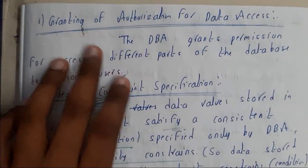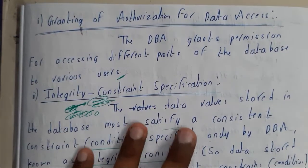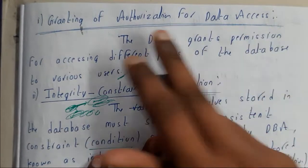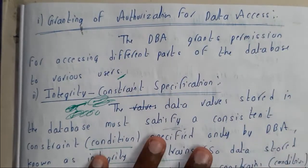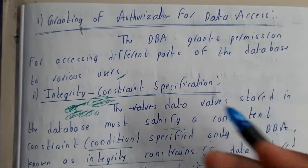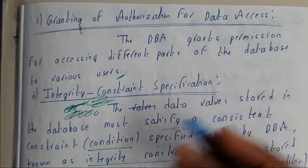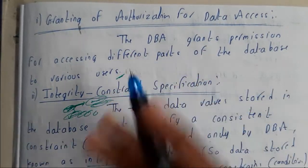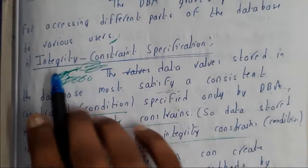The database administrator can grant permissions and authorize further data accessing. They can give permissions for particular users and will be providing usernames and passwords to access the data.